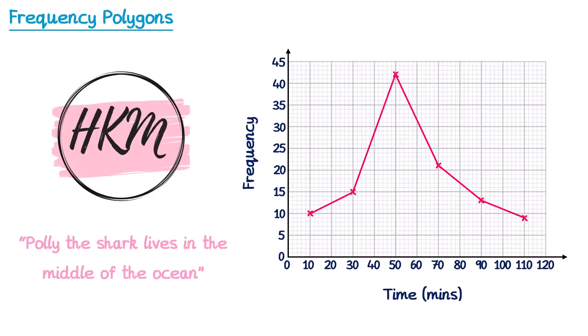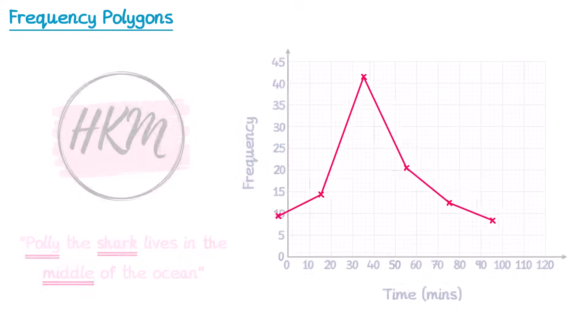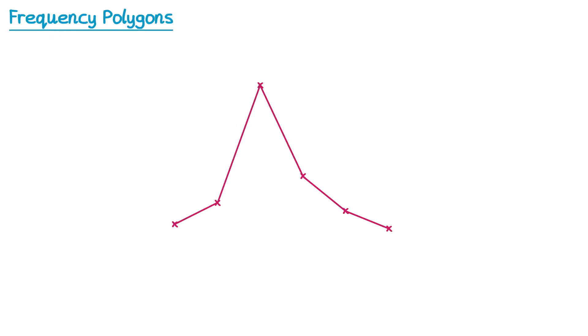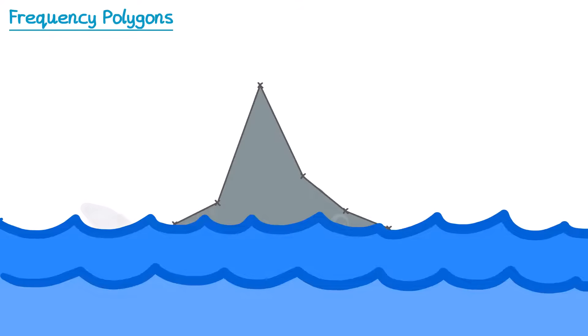Polly the shark lives in the middle of the ocean. The word Polly is used because we're drawing a frequency polygon. The word Middle is used to help us remember to plot at the midpoints. And Polly is a shark because the general shape of this diagram looks a little bit like a shark's fin. If we add on some water, and then a bit of colour, then we could say that this is Polly the shark.